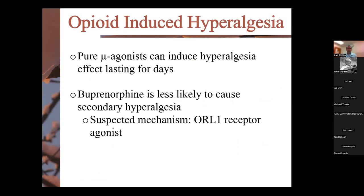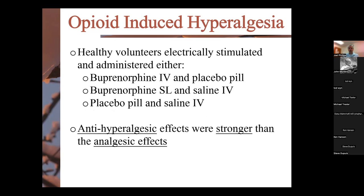Opioid-induced hyperalgesia is less likely a problem with buprenorphine. It's the pure opioid agonists that induce that hyperalgesia, while buprenorphine — through the ORL1 receptor mechanism — is less likely to cause it. When we do see hyperalgesia, buprenorphine can help prevent or stop it. In one study, healthy volunteers were electrically stimulated and given either IV buprenorphine with placebo, sublingual buprenorphine with saline IV, or a placebo pill with saline IV. Patients who received buprenorphine had higher anti-hyperalgesic effects than analgesic effects — actually cutting down on that hyperalgesia.